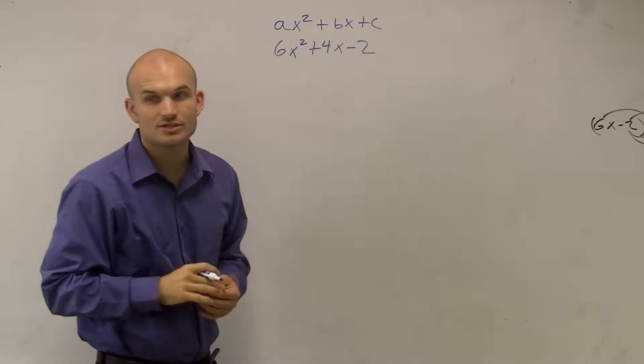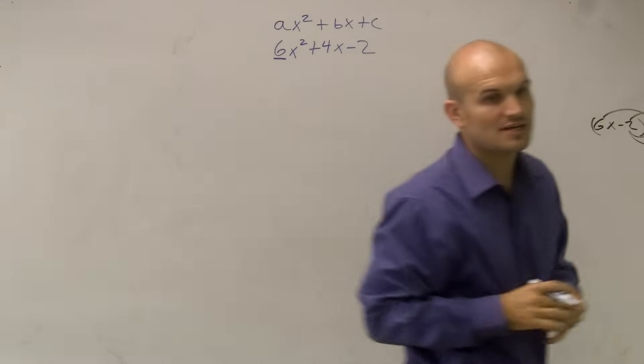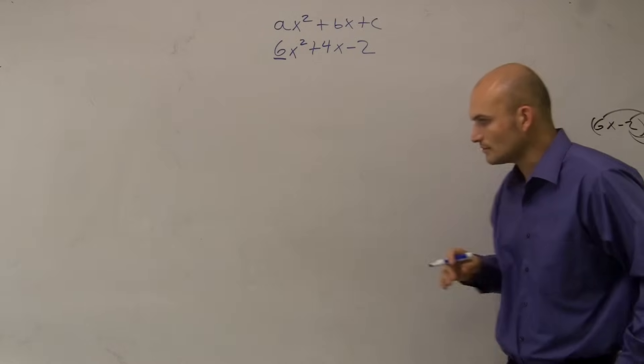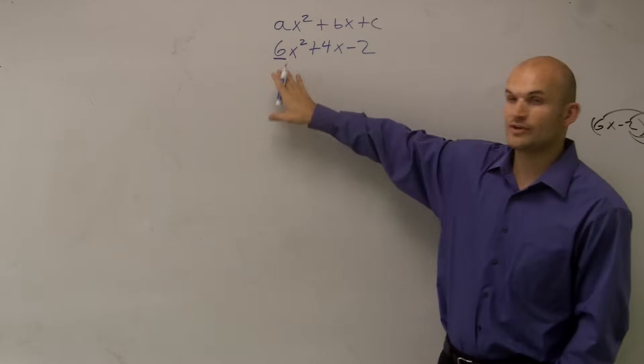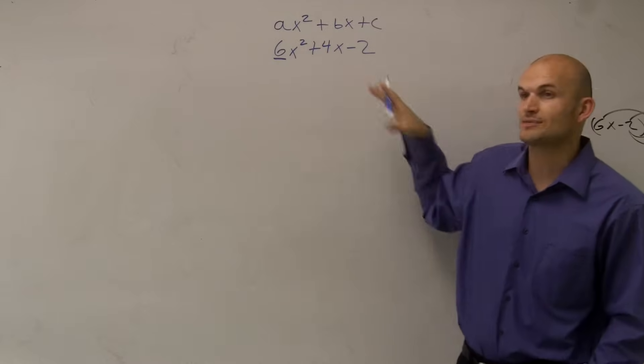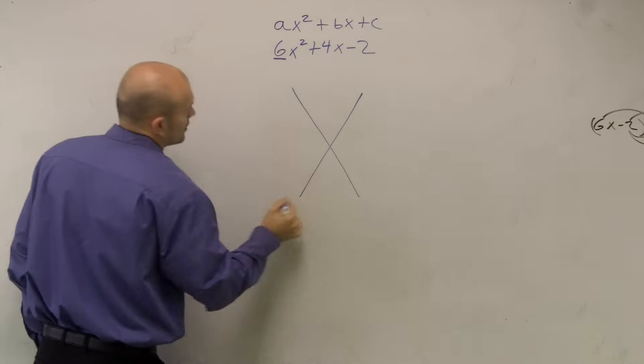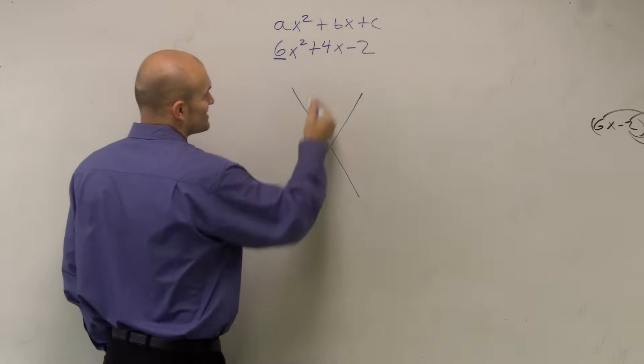And the one thing I noticed about this trinomial is that I have a number in front of my x squared, my square term. So therefore what that tells me is to help me figure this problem out, to help me write this as a product of two numbers, I'm going to utilize this X.